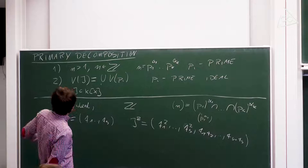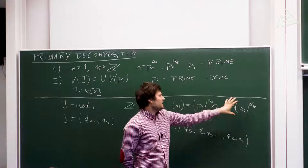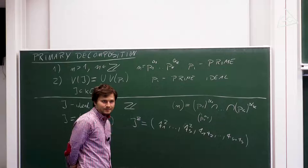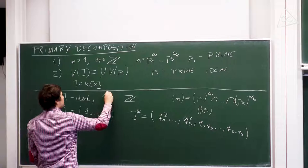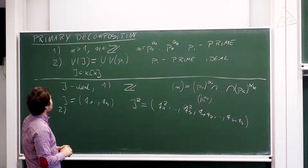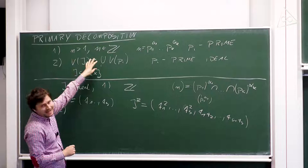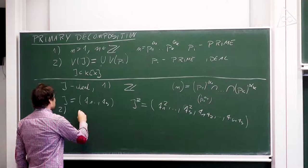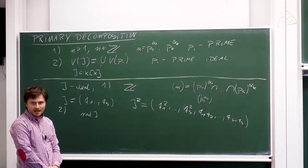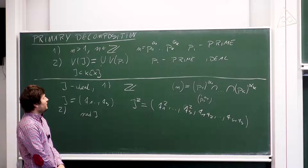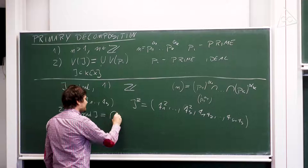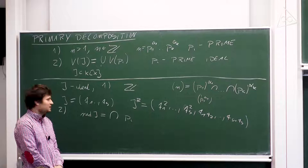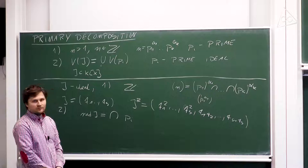So the basic theorem in number theory can be restated as a theorem about intersections of ideals — that's point one. To restate point two, over an algebraically closed field varieties are represented as radical ideals. The radical of an ideal I corresponds to a union of varieties associated to prime ideals, meaning that the radical of I is a finite intersection of prime ideals.